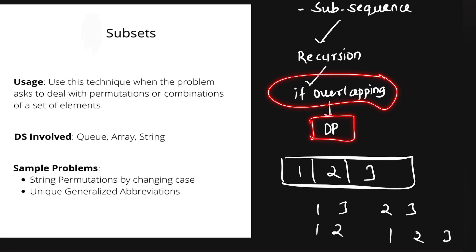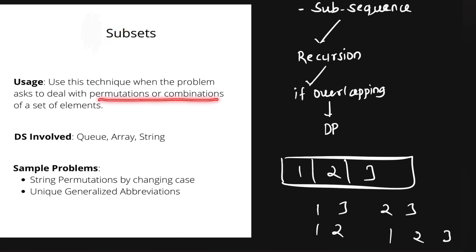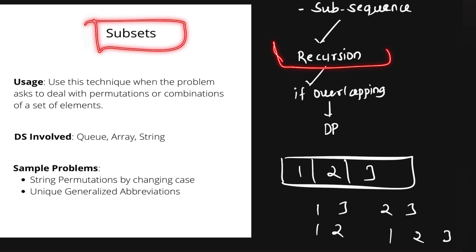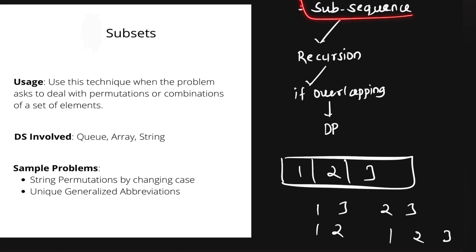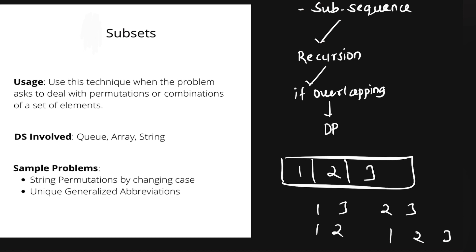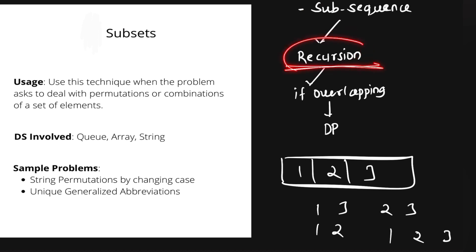Subset problems can involve finding permutations and combinations of a given string or array. If there are overlapping subproblems, dynamic programming (DP) can be used to optimize the solution. To be strong in subsets, you must be strong in recursion, because subsequence and subset problems cannot be solved without it — recursion is the only way to explore all possible choices for every element.